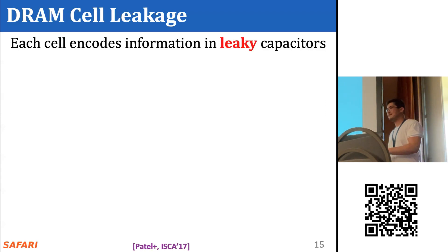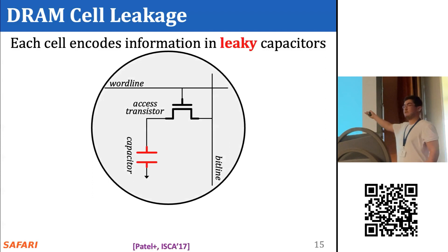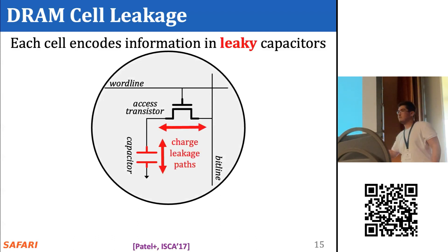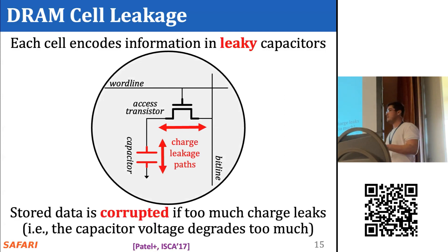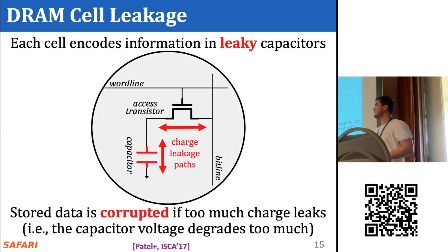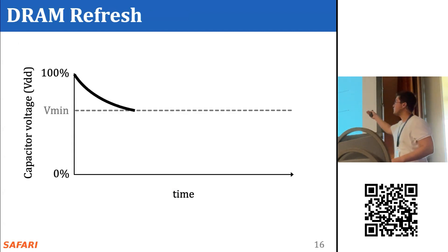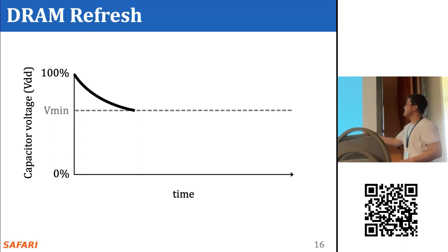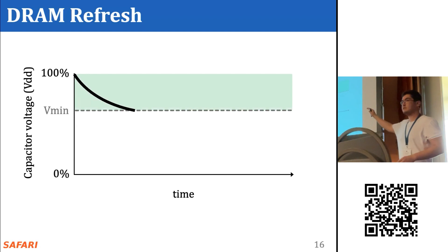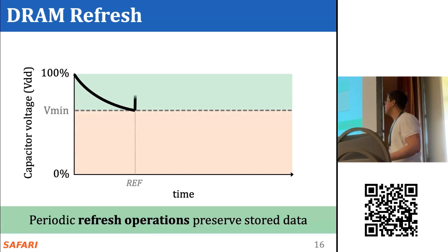Each DRAM cell stores data in fundamentally leaky capacitors. The capacitor stores data and the access transistor determines cell access. There are many leakage paths by which charge can enter or exit the cell, and the stored data can become corrupted if too much charge leaks — that is, if the capacitor voltage degrades too much. The capacitor voltage degrades in an exponential decay over time. There is a threshold below which we can no longer guarantee correct data storage. Above this line is a retention success; below is a retention failure. To prevent retention failures, we periodically restore charge using periodic refresh operations, and we call the delay between consecutive refresh operations the refresh interval.